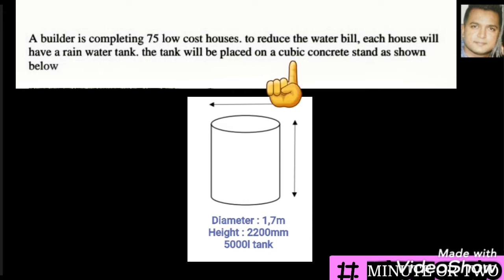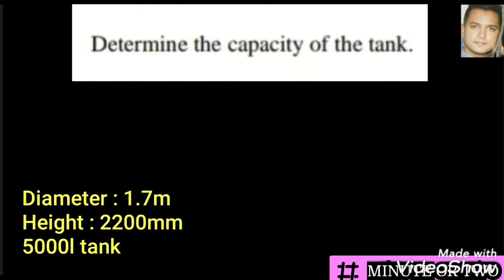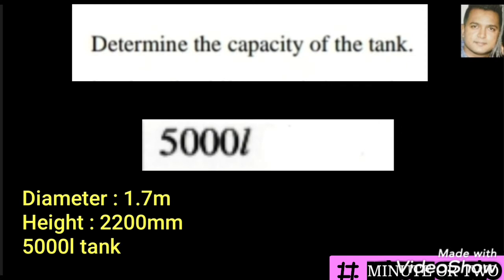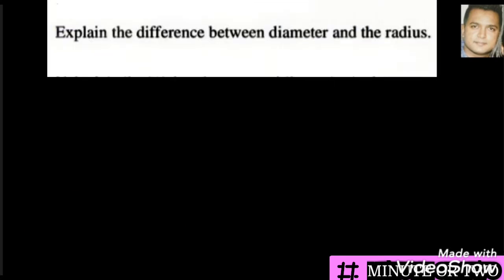The word 'cubic' in the question comes from the word 'cube,' and we know that for cubes the length, breadth, and height are all equal. Determine the capacity of the tank — the word 'capacity' means how many liters, milliliters, or kiloliters are in this tank. The information was given to us in the diagram: it is 5000 liters.